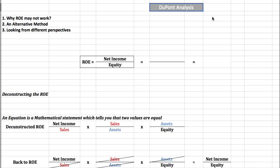As for the first point, why does the return on equity may not work? When we look at the return on equity, we know that this is a profitability measure that is going to tell us what's the return for the shareholders, and this is given by the net income over the equity. But how do we actually know whether the return on equity is healthy or not for our organization? If you look at this number by itself, it's not going to tell you much about the company.